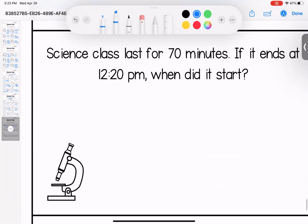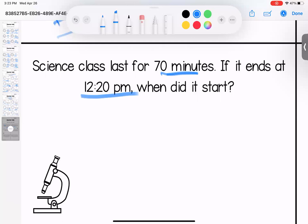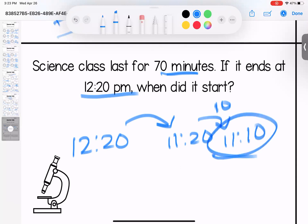Science class lasts for 70 minutes. If it ends at 12:20 PM, when did it start? So we have 12:20 and we're working backwards 70 minutes, which is an hour and 10 minutes. One hour would give me 11:20, 10 more minutes would give me 11:10. It starts at 11:10.